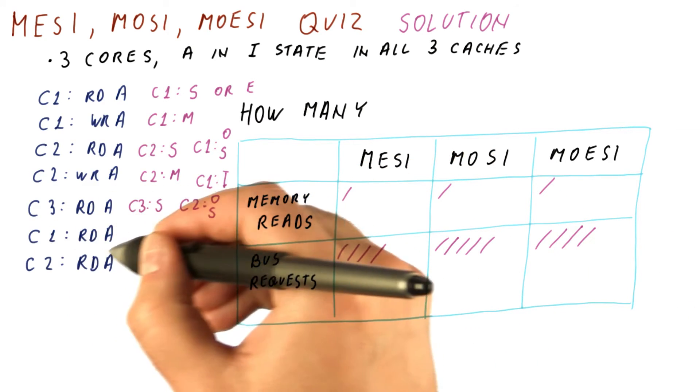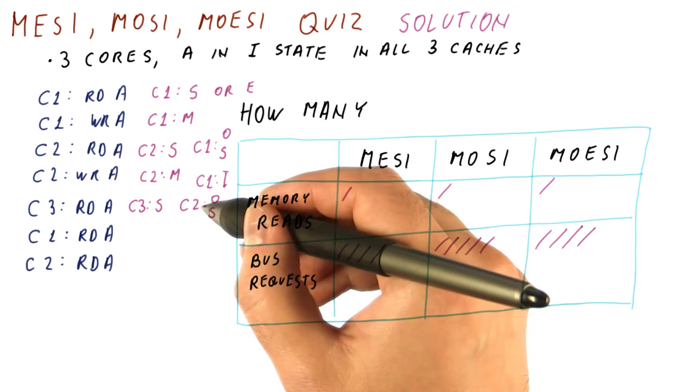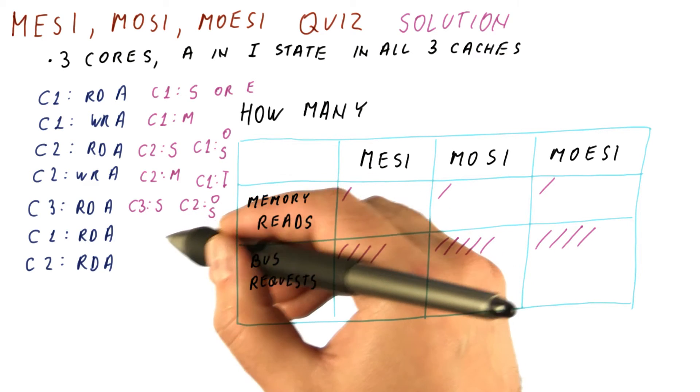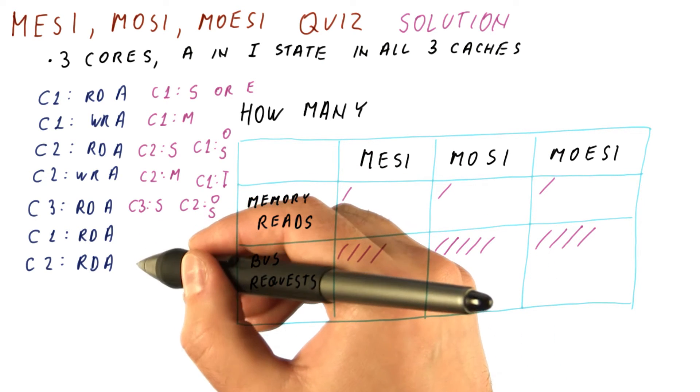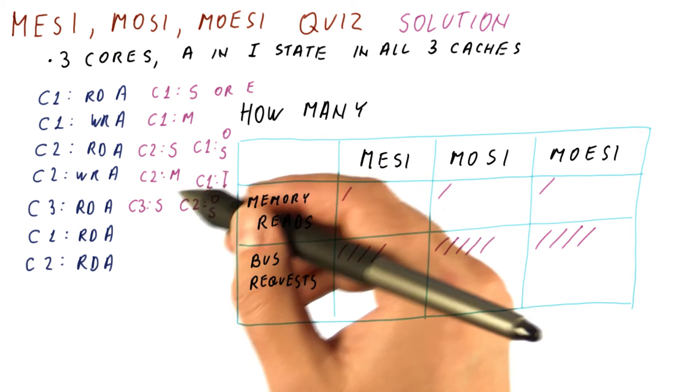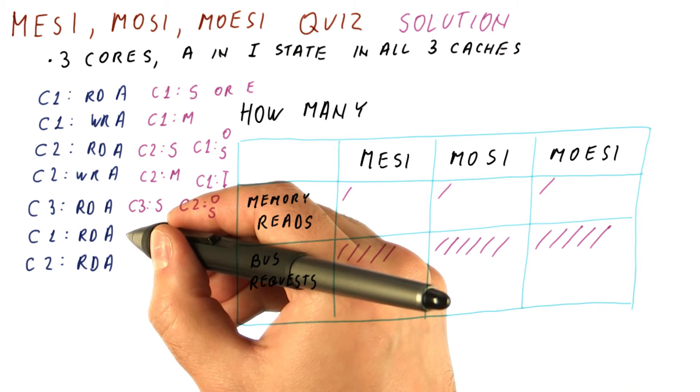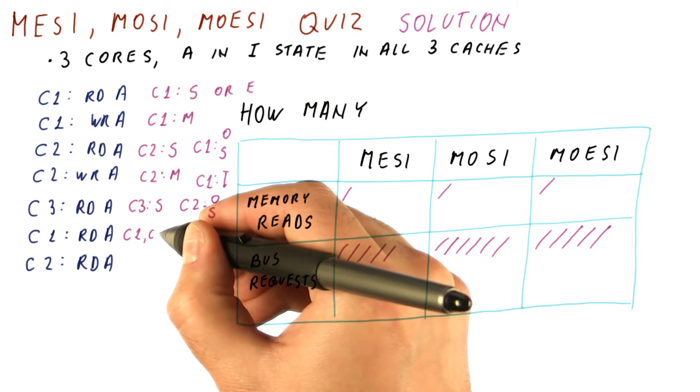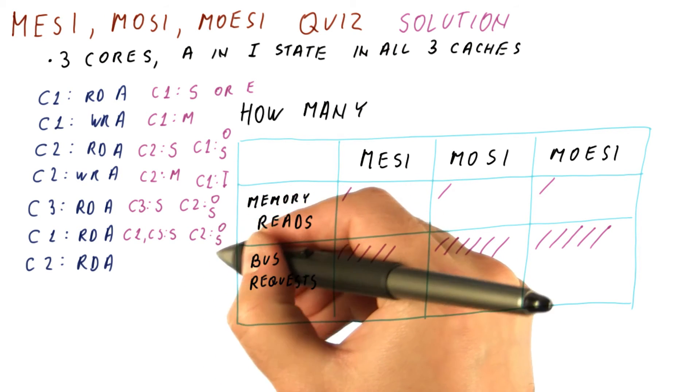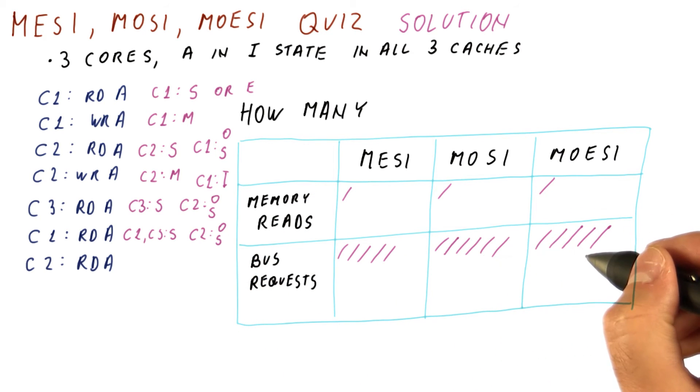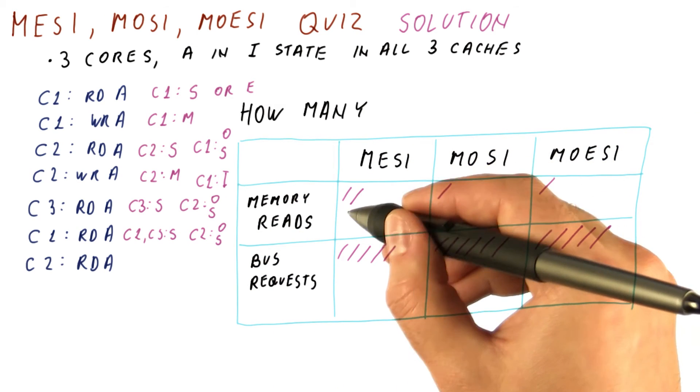However, when C1 reads, if we are in the shared state in C2, C1 ends up reading memory. So if we have the O state, C2 is able to intervene and supply the data to C1. If we have the shared state, then there are memory accesses in both of these. C1 had the block in the invalid state, so definitely the read request will be put on the bus. And now what we have is basically C1 and C3 have the block in the shared state. C2 retains the block in the owned or shared state. So there was a bus request here, and there was a memory request if we didn't have the O state. So here we have an additional memory read.